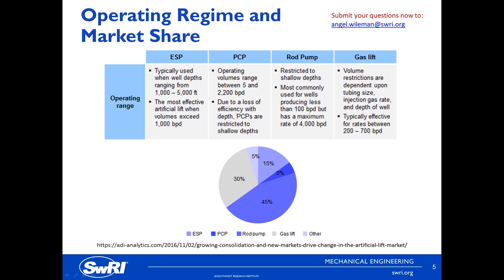The figure above illustrates the typical operating regime for each major artificial lift method. As shown on the table, ESPs are a high throughput type of lift that can be used in deep wells. Progressive cavity pumps and rod pumps are mid-range in terms of throughput, but limited to shallow wells due to efficiency losses of the pump system.